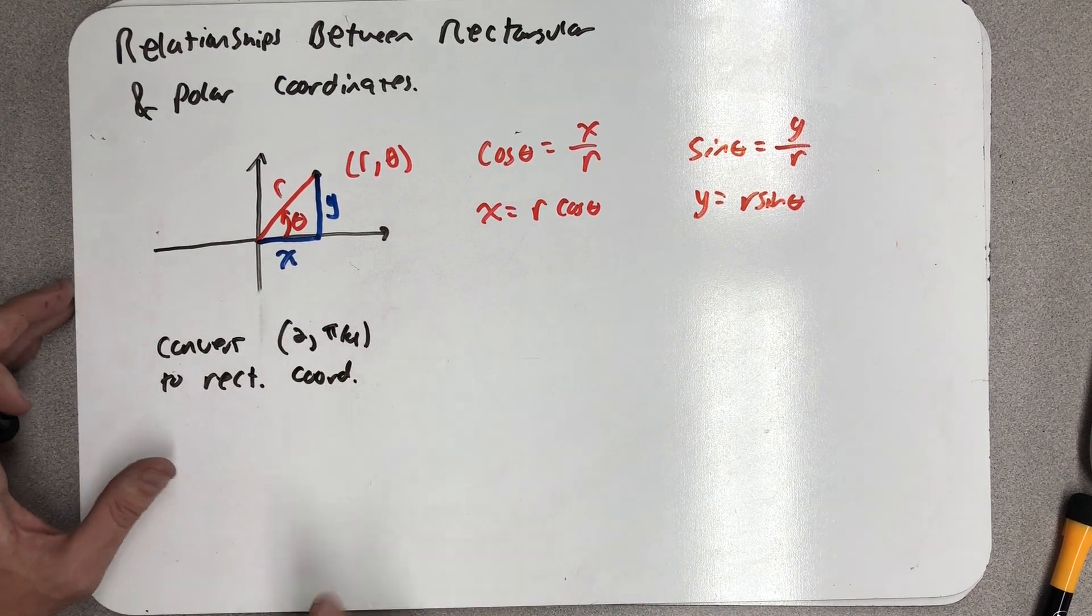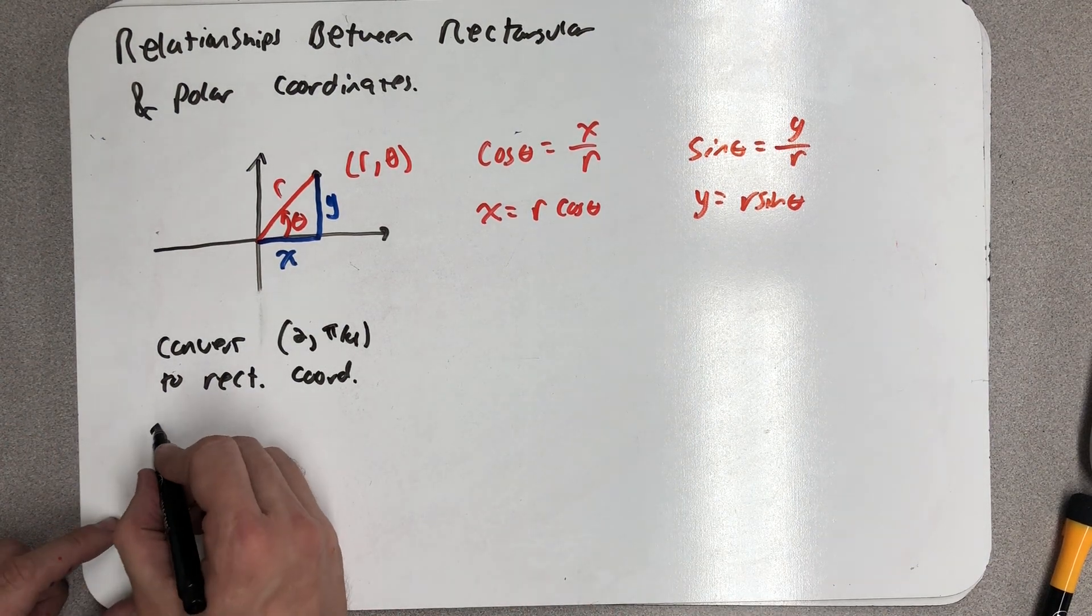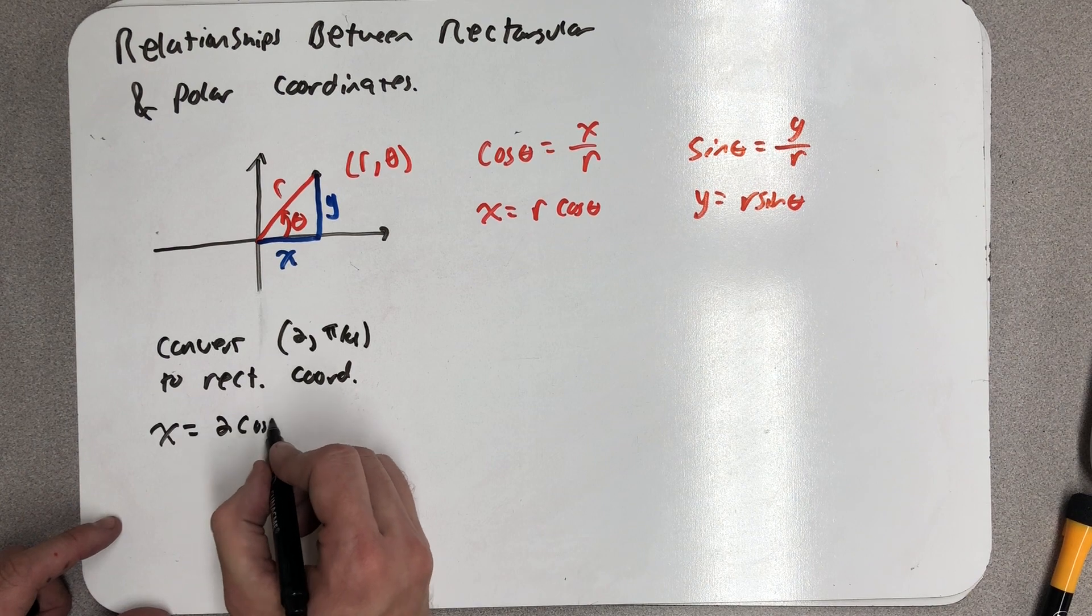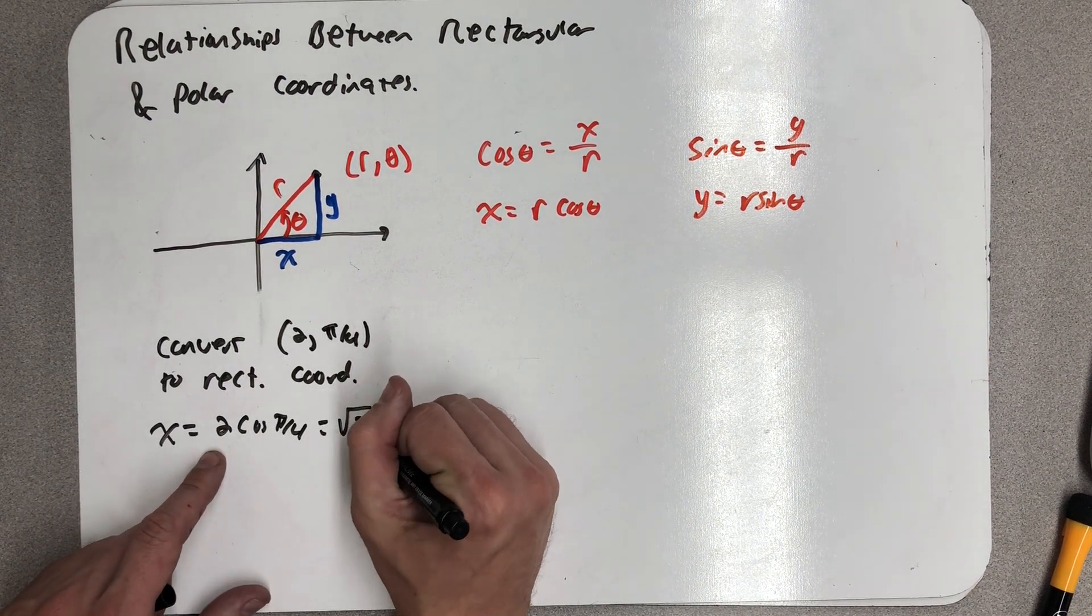So I want to convert the point (2, π/4) to rectangular coordinates. Well, x is equal to 2 times the cosine of π/4. That's √2/2 times 2, which is just √2.